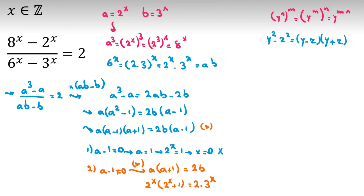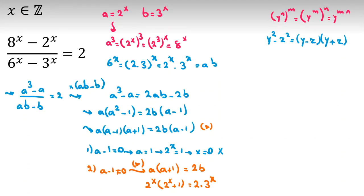So in case 2, we consider 2.1, x is positive. In 2.1, suppose x is greater than or equal to 1. Let's consider 2 to the x times 2 to the x plus 1 equal to 2 times 3 to the x.